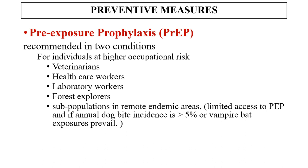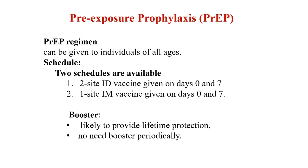Preventive measures: pre-exposure prophylaxis is recommended for individuals at high occupational risk — vets, healthcare workers, laboratory workers, forest explorers — or subpopulations in remote endemic areas with limited access to post-exposure prophylaxis. It is also given where annual dog bite incidence exceeds 5% or vampire bat bite exposures prevail. Two schedules are available for all ages: two-site intradermal or one-site intramuscular vaccine given on days 0 and 7. This is likely to provide lifetime protection, so booster is not needed periodically unless indicated.